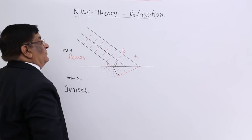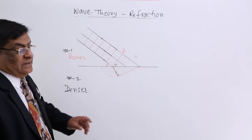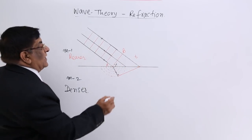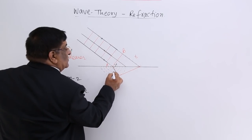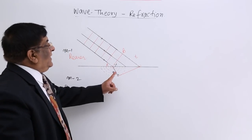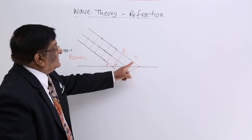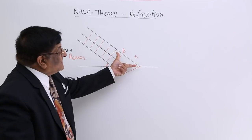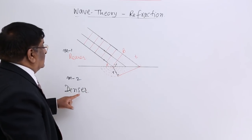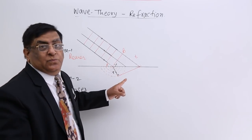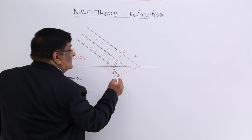The direction of propagation is always at right angles to the new wavefront. This is the new front. From one point to another, the time taken is T in both cases. At time T, the disturbance in the rarer medium has reached a larger distance, while in the denser medium it has reached only a smaller distance — because the speed is lower. So one line is long and the other is short.